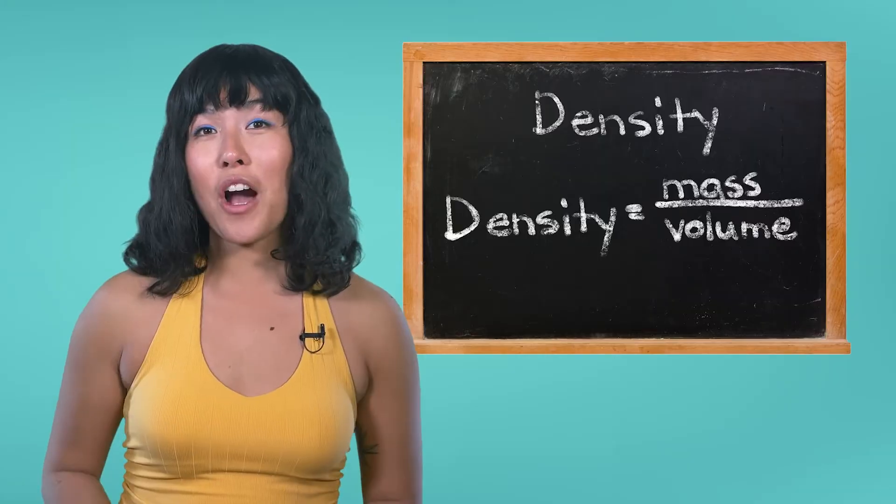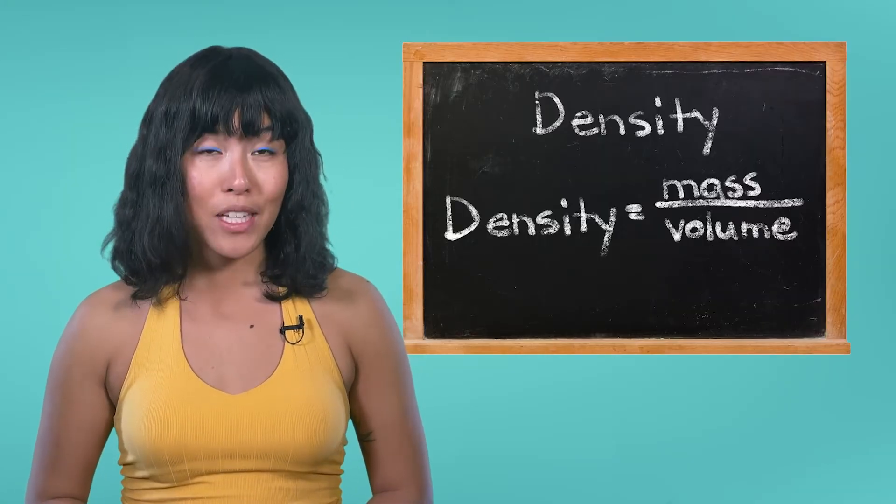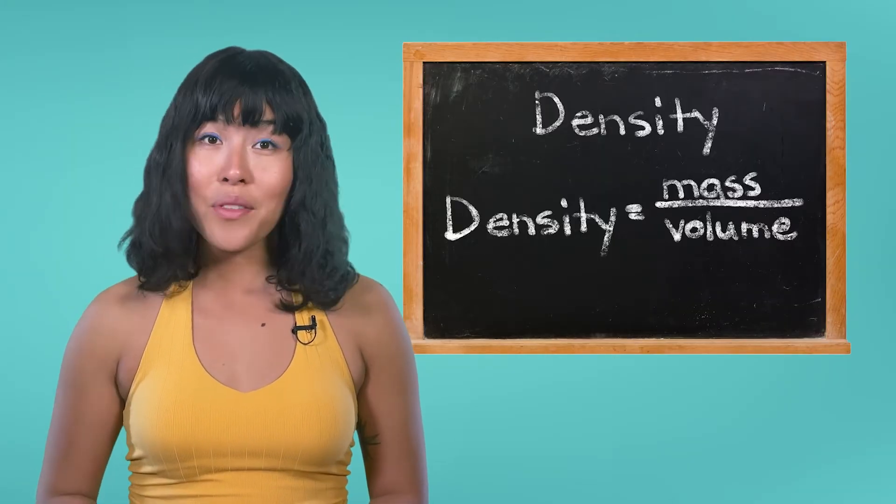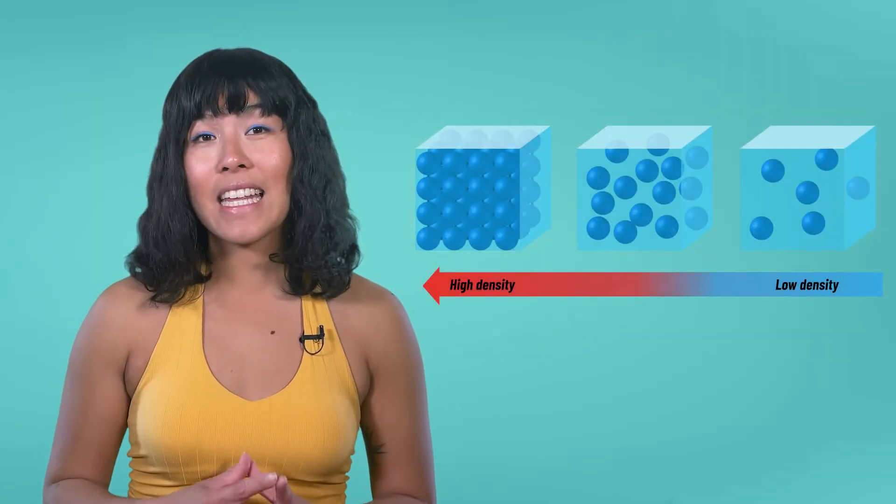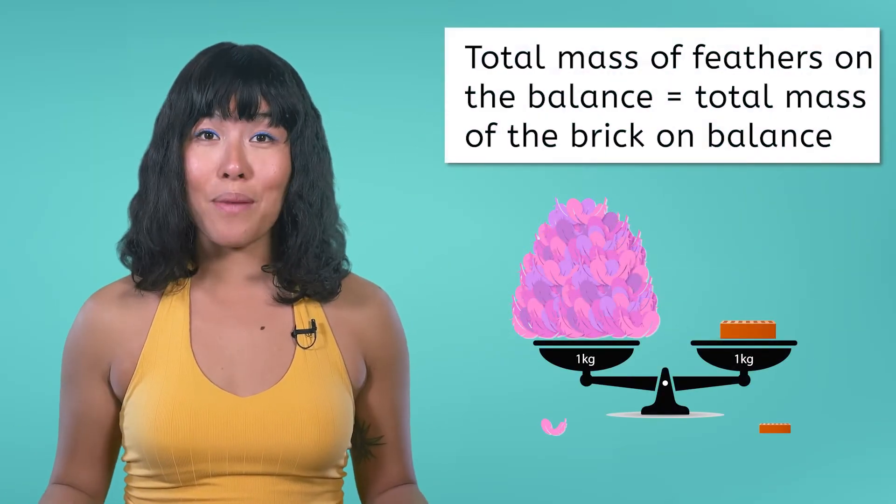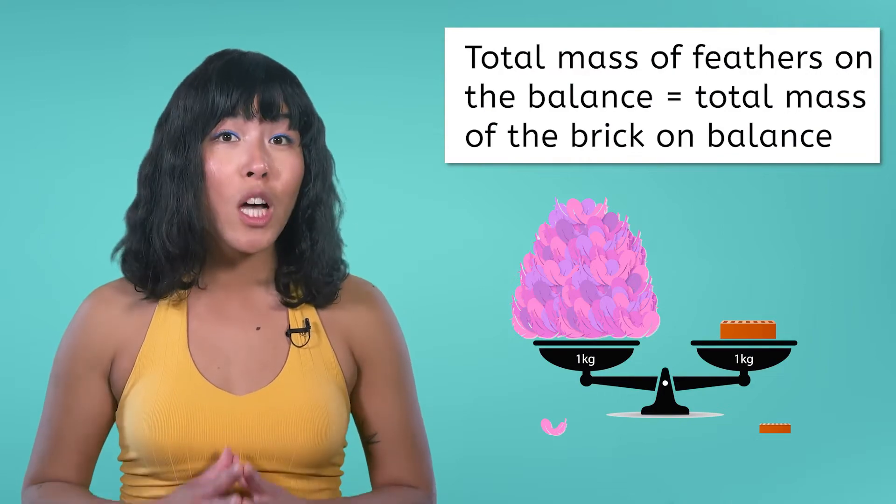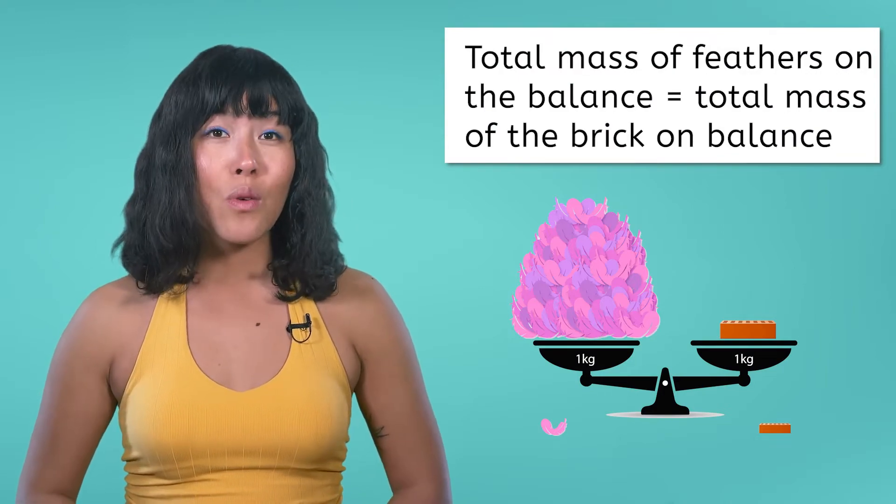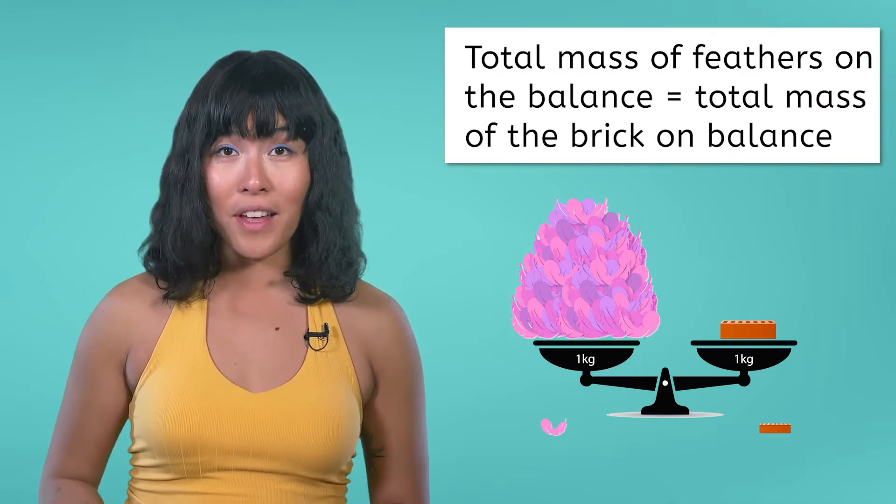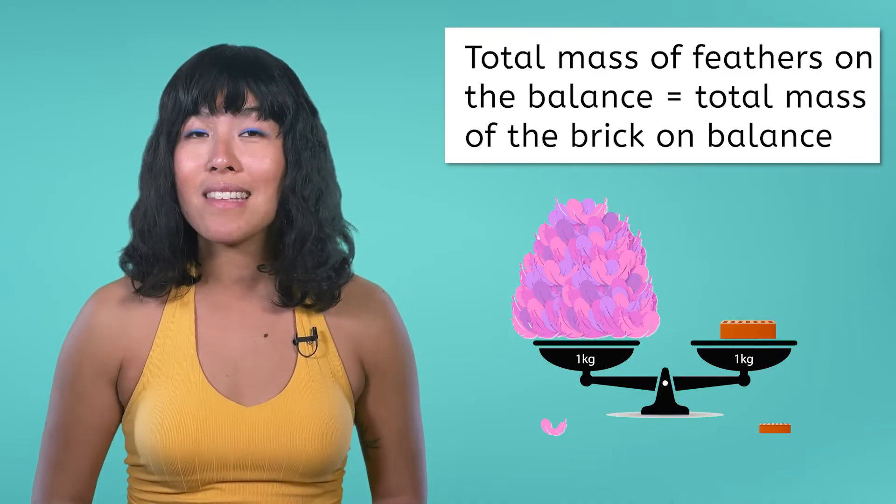The density of an object is the ratio of its mass to its volume. In other words, it is how tightly the particles are packed in an object. In this example, feathers have a much lower density than bricks, so it will take a much higher volume of feathers to have the same mass as the bricks.